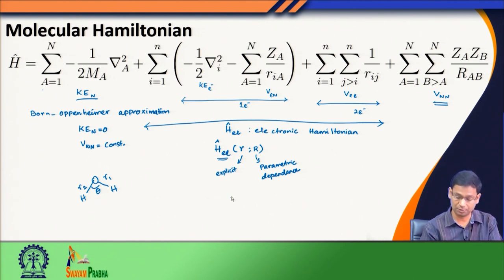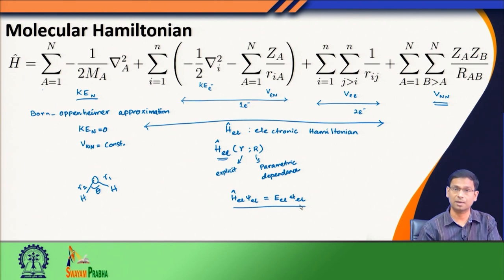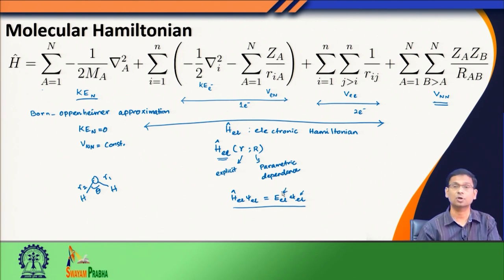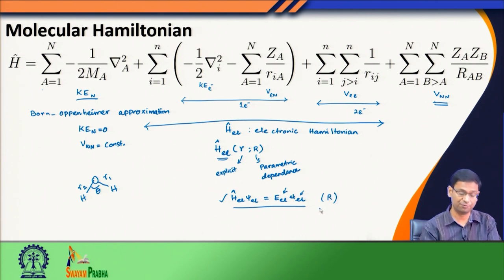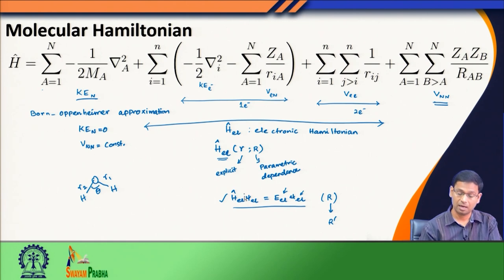So the solution we get — the electronic part of the solution — is applicable only for a fixed value of R₁, R₂, and θ, or for a fixed nuclear geometry. If I solve the electronic Hamiltonian, I get the electronic wave function ψ_electronic and corresponding energy E_electronic. This equation holds for a fixed nuclear configuration. Now if I change the nuclear configuration from R to R′, my solution would also change — I get a different wave function and a different energy.